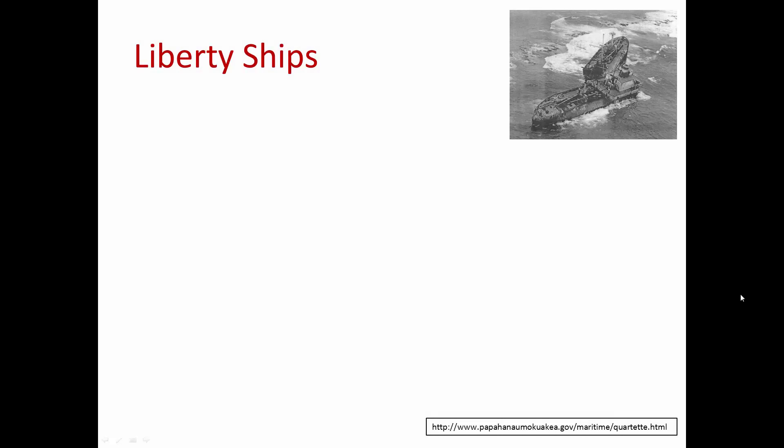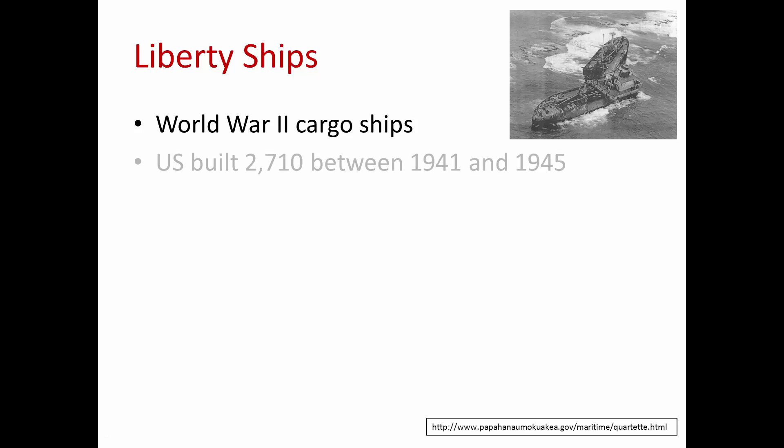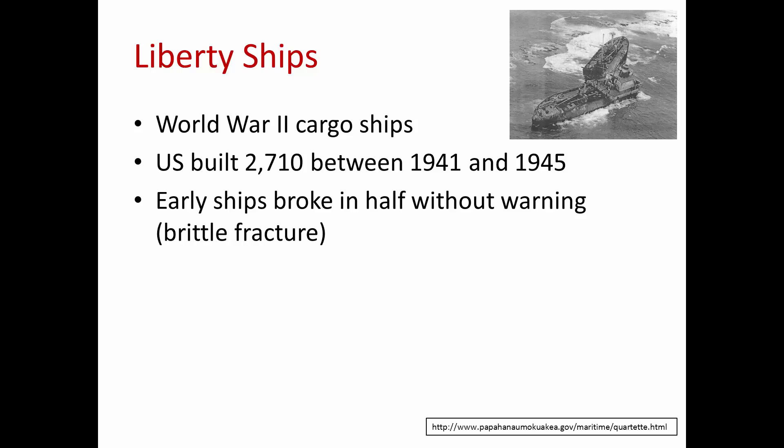The Liberty ships were built during World War II primarily as cargo ships, although some did also carry troops. The U.S. built over 2,700 Liberty ships. A problem developed with some of the early ships — these broke in half without warning, and sudden catastrophic fracture is called brittle fracture.